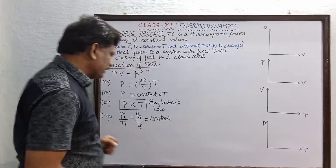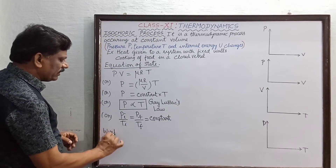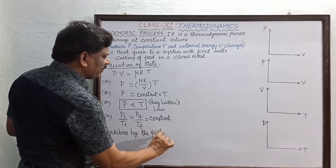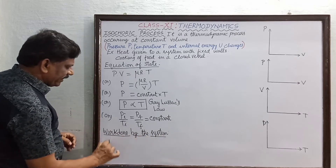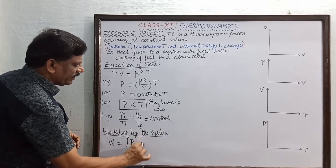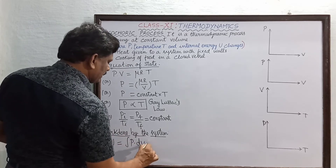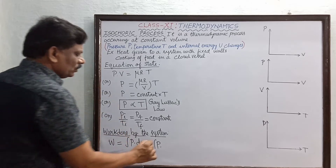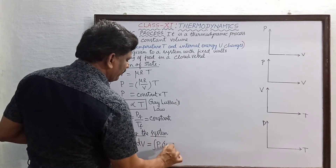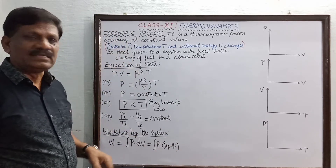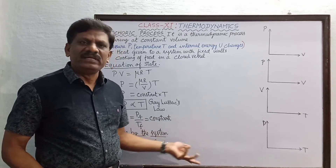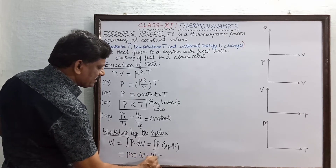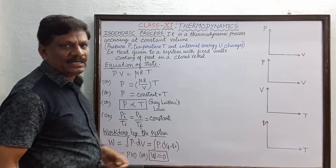Next we derive the expression for work done by the gas. The general expression for work done by the system is W = ∫P dV, which equals P × (V_final − V_initial). But since the volume is constant, V_final = V_initial, so this is P × 0. Therefore, the work done by the system W = 0.